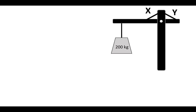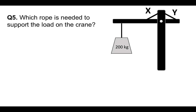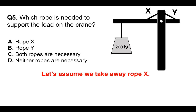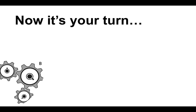Next one. Here we have a crane. Question five: which rope is needed to support the load on the crane? This is a real common question during mechanical comprehension tests. Is it rope X, rope Y, both ropes are necessary, or neither rope is necessary? To answer this, let's assume we take away rope X. We remove rope X — rope Y is left, but it would not be serving any purpose at all, as the load can now drop down, because the lever could then move up from the bottom. Therefore, we do need rope X. The correct answer is A — rope X — because then the load can't move anywhere.